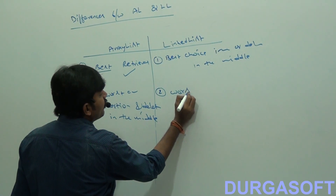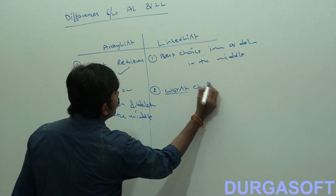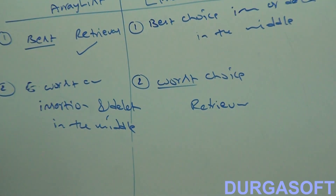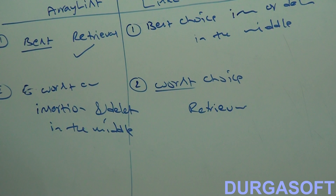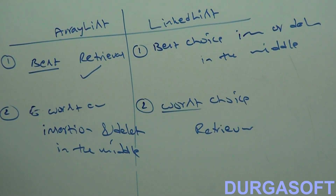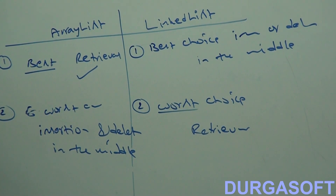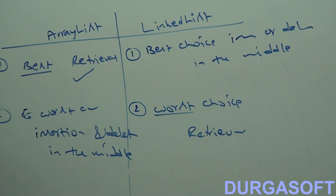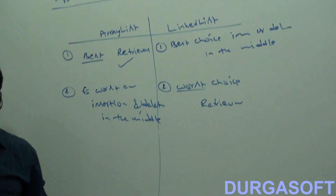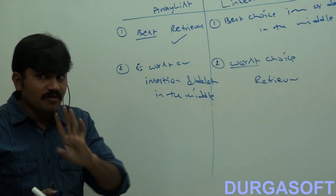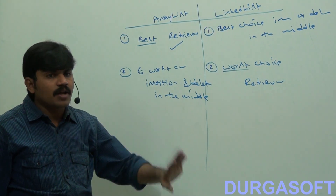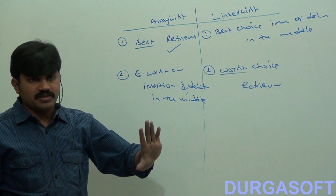LinkedList is the worst choice if our frequent operation is retrieval. Because every retrieval operation should start from the first element only. Even if you are asking for the tenth element, the first element provides the second element's address, the second provides the third, and so on. That's why every search operation must be performed from the first element onwards.